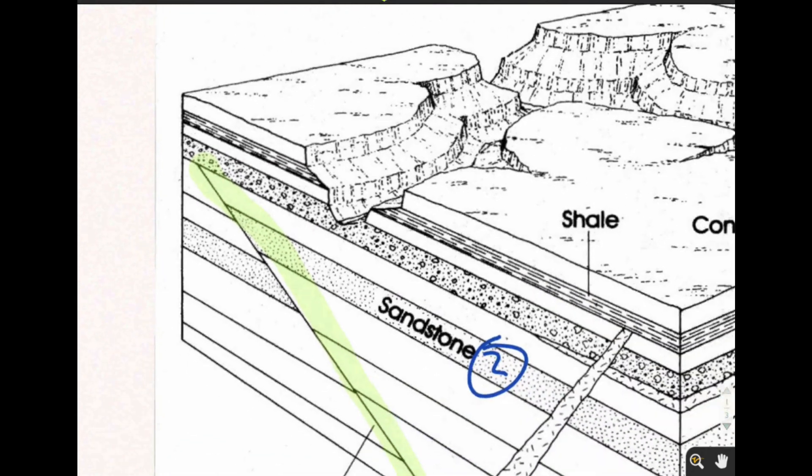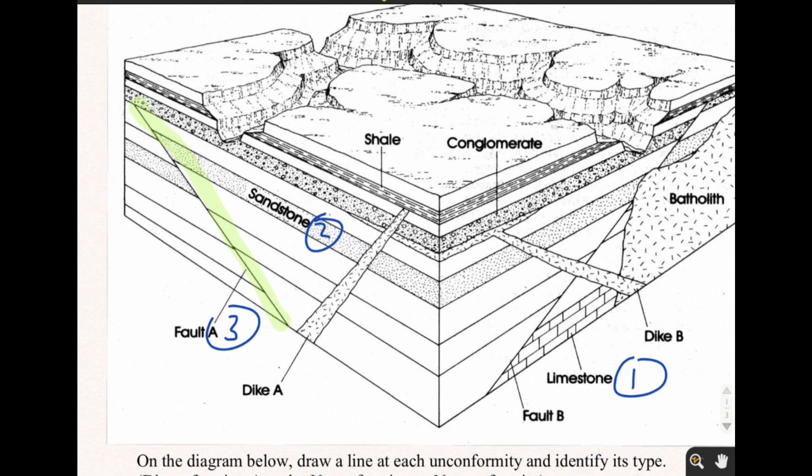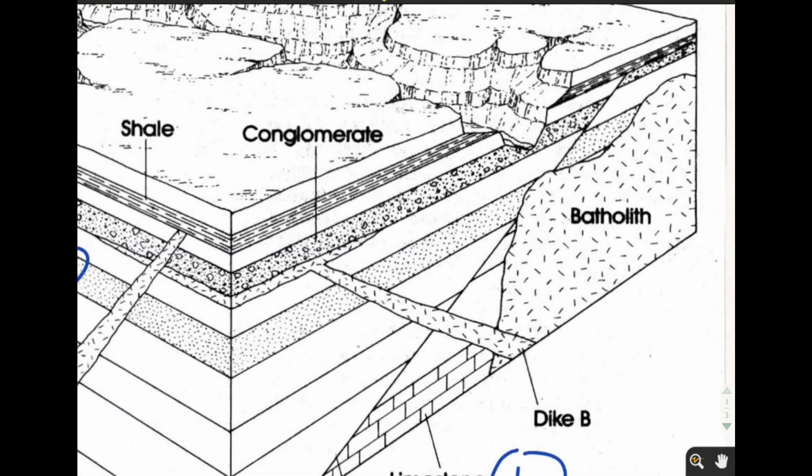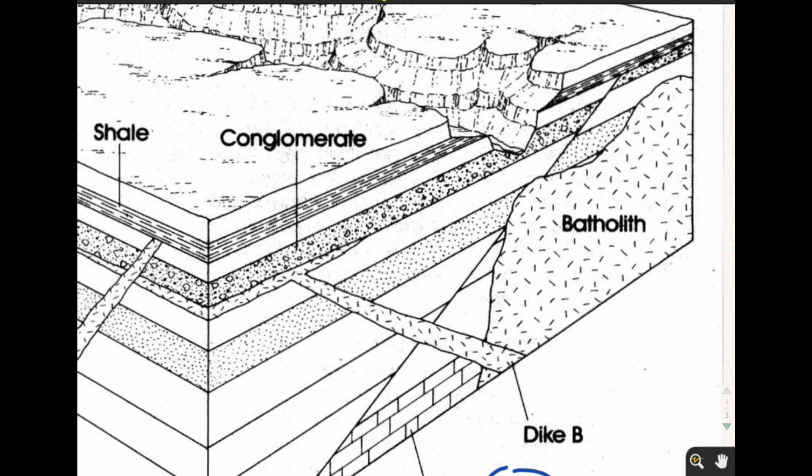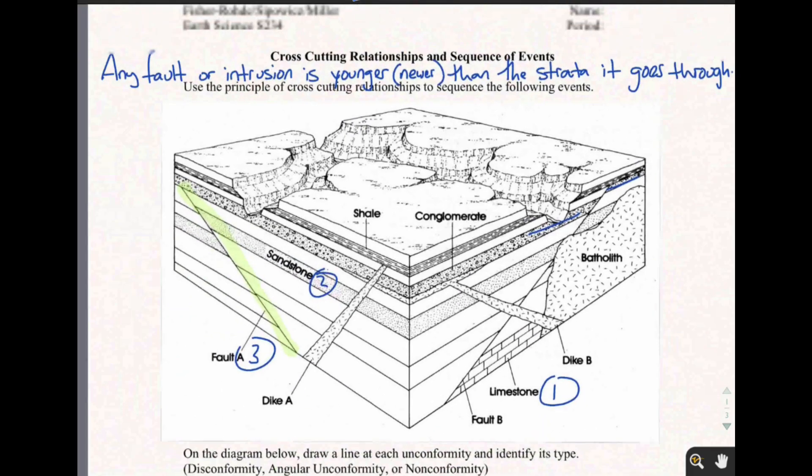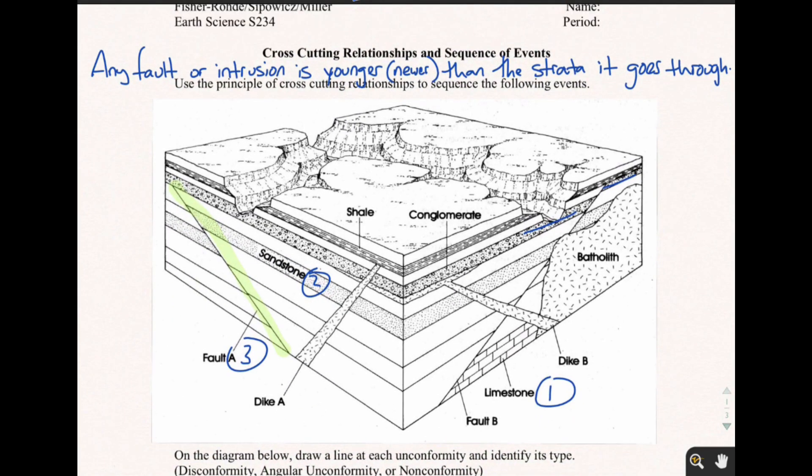And what if we take a look at Dike B, Dike A, Fault B, everything else either goes through or cuts through the conglomerate. And because Fault A does not go through the conglomerate, it had to have been there before the conglomerate got there.